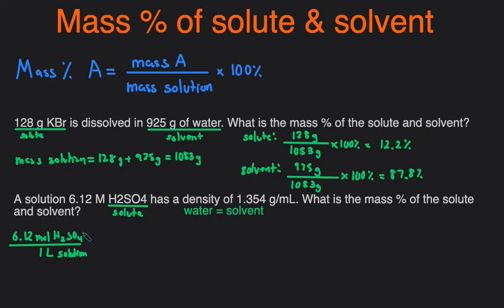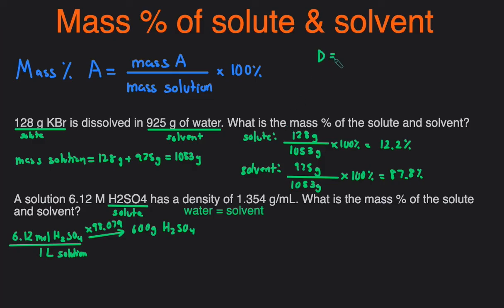We have the moles of the solute. We can convert this to grams of the solute by multiplying by the molar mass, which is 98.079 g/mol from the periodic table. This gives us approximately 600 grams of H₂SO₄. So we have the grams of the solute. Now we have to figure out the mass of the solvent as well as the mass of the solution. Since we have the volume of the solution and the density, we can use the equation: density equals mass divided by volume.